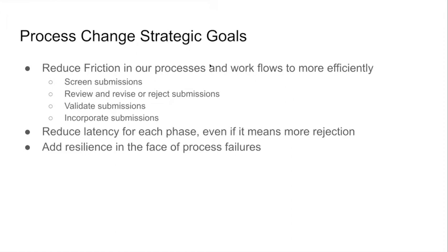We need to have some strategic goals. There are four areas of friction to address to make workflows more efficient. First, we need to reduce friction in screening submissions — when we get a submission, how do we validate it should go to the next step or reject it automatically? Second, we need to reduce friction in reviewing, revising, and rejecting submissions — how do we validate that a submission we think is good is ready to land in the tree? Third, once it passes basic tests, how do we make sure it gets incorporated? And fourth, we need to reduce latency at each step.